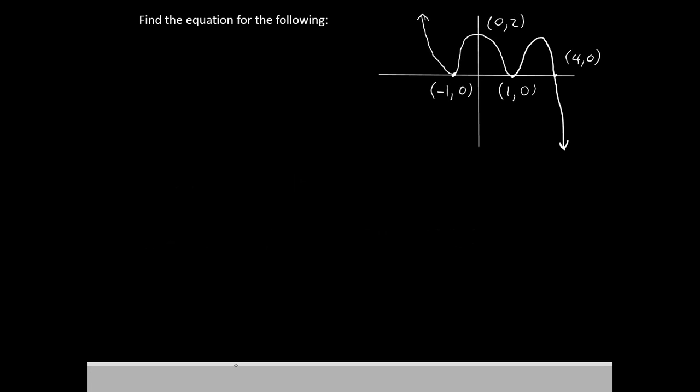All right, so here's our graph. I've marked down all of the x-intercepts here and the y-intercept here. The first thing we need to do is check the x-intercepts. Those formed the basis for our equation last time, so let's do that again.